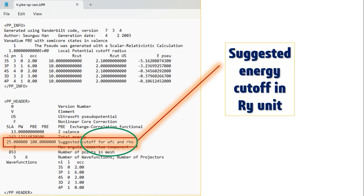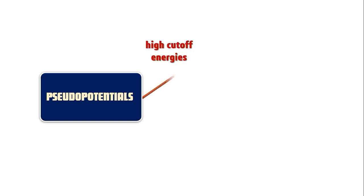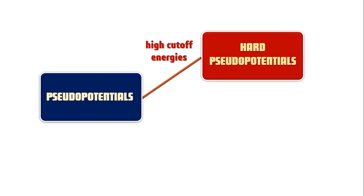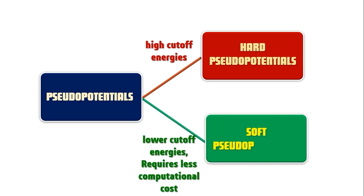Now, pseudopotentials requiring high cutoff energies are said to be hard pseudopotentials, while more computationally efficient pseudopotentials with lower cutoff energies are called soft pseudopotentials.